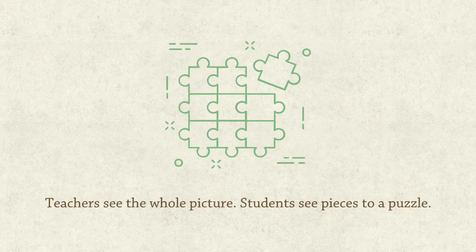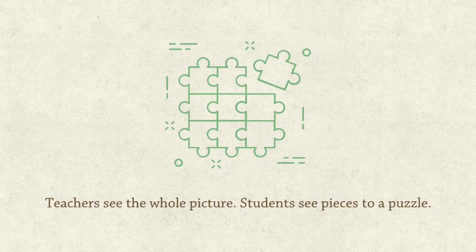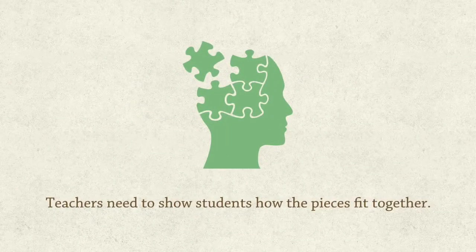Teachers tend to explain things the way they see them in their mind, and that's usually as a full, complete, and whole picture from the start to the finish. Students, on the other hand, are only having this picture revealed to them piece by piece. And teachers need to remember this — that they should slow down and reveal these pieces carefully, because this leads to an imbalance between the language that we teachers think in and the language that students are able to understand.